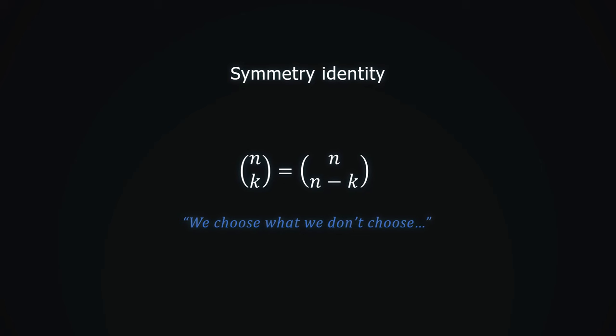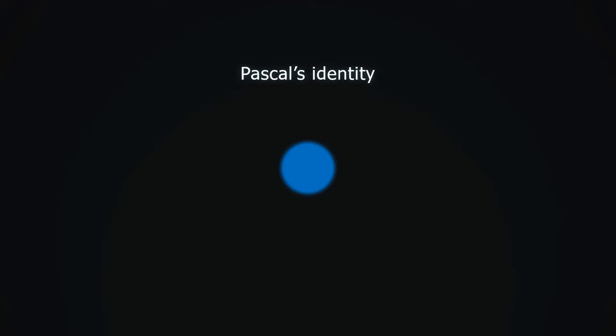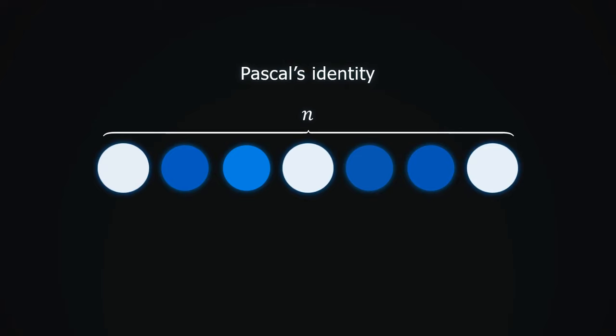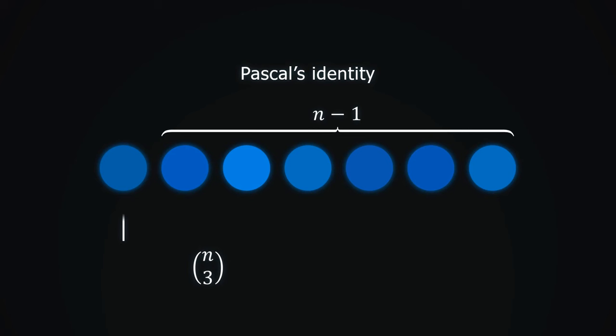We want to somehow calculate the coefficients using the ones we have already previously calculated. Here, we use our next identity. As before, we are choosing 3 elements from n available. If we take it, then we choose the remaining 2 elements from the next n minus 1 elements. There are n minus 1 choose 2 ways to do this.